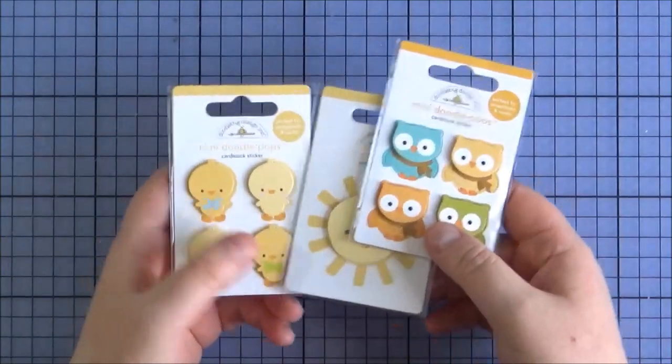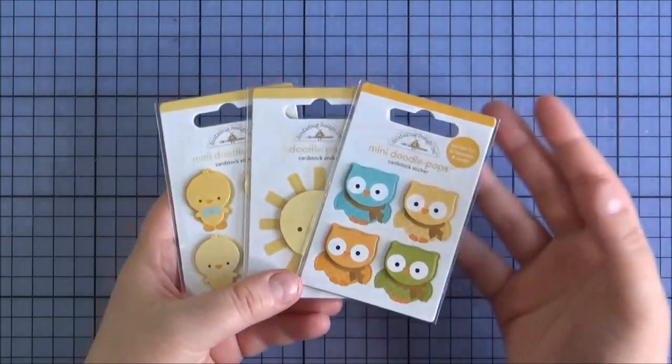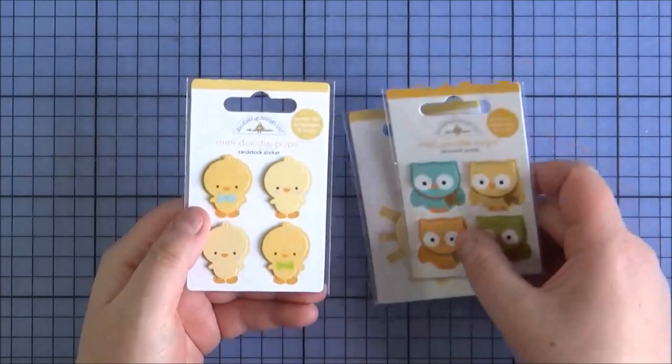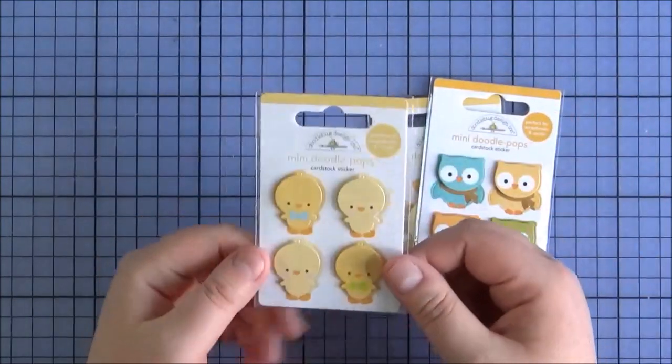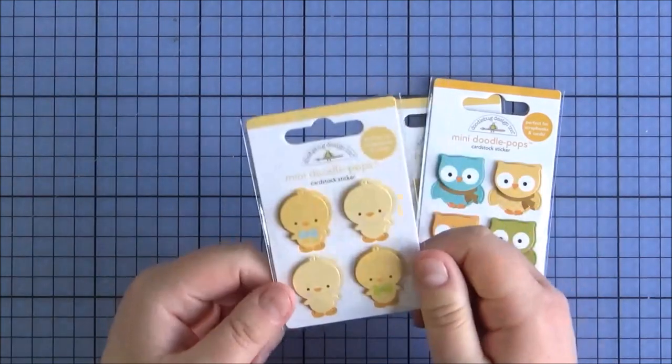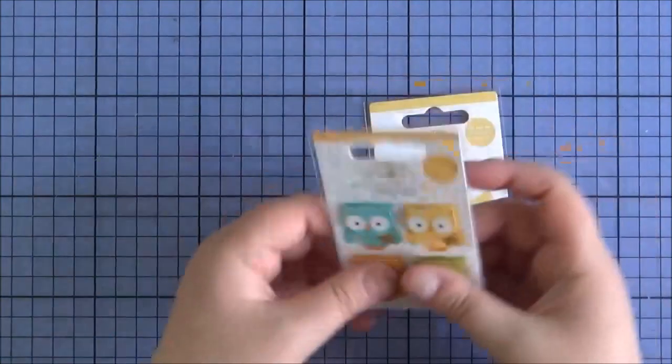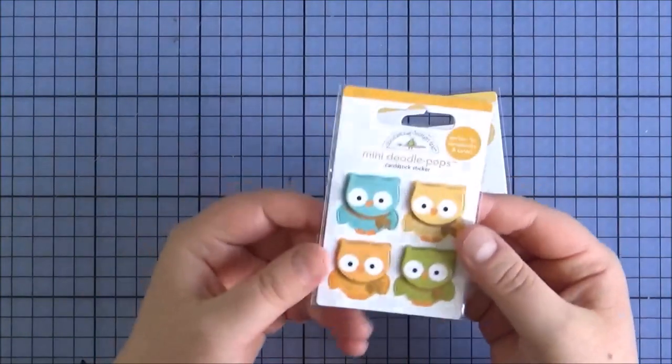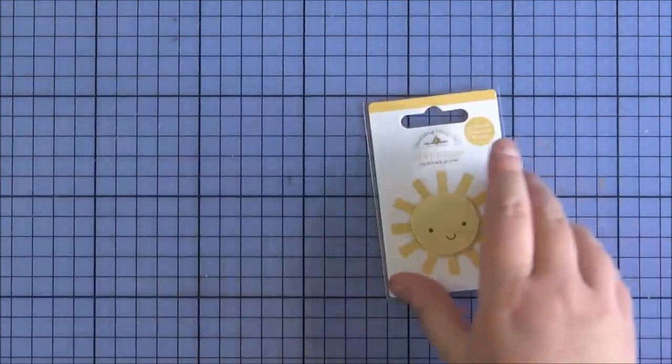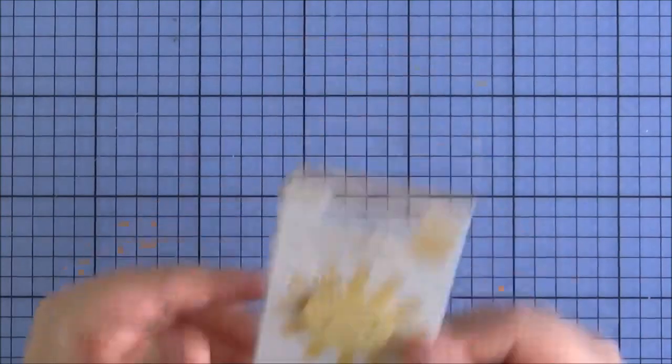And then last but not least, I've got a couple of Doodle Bug items. These are the Doodle Pop stickers. I really like these, especially for adding onto a tag or something like that. I just think they're quite cute and nice to have. So this is the Mini Doodle Pops. These are the Chickies, which would have been nice for Easter but I didn't order in time for that. These are the Barn Owls, just really cute. And this is the Mr. Sun, just a really cute little sunshine there.